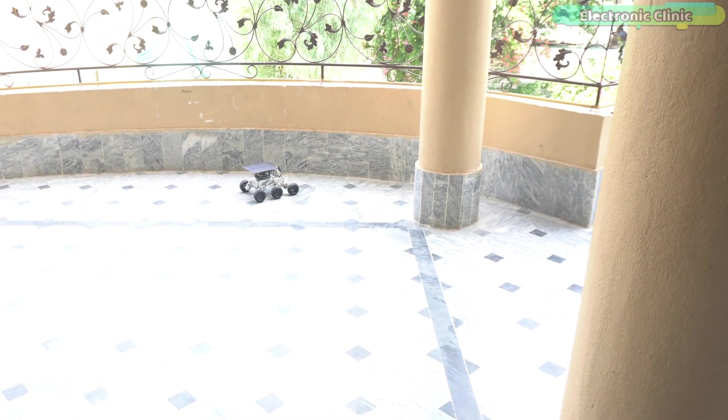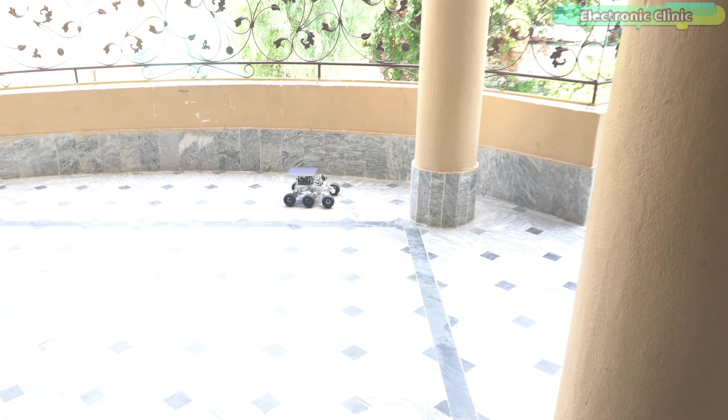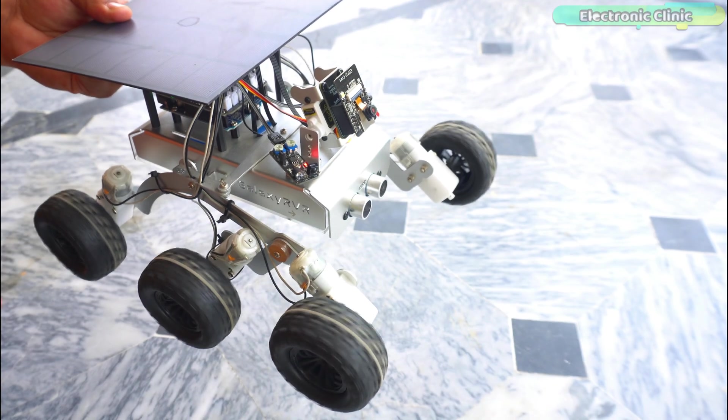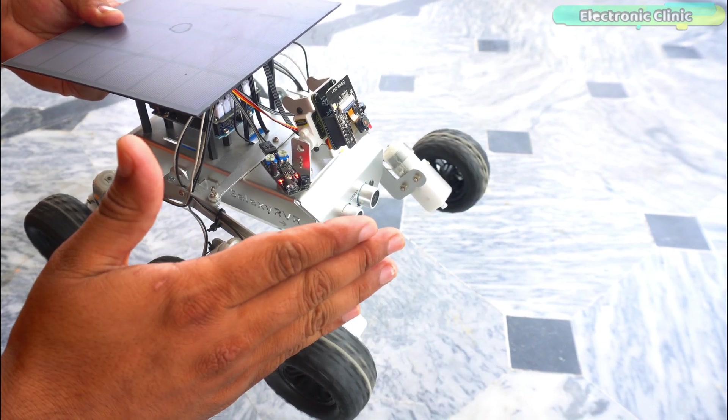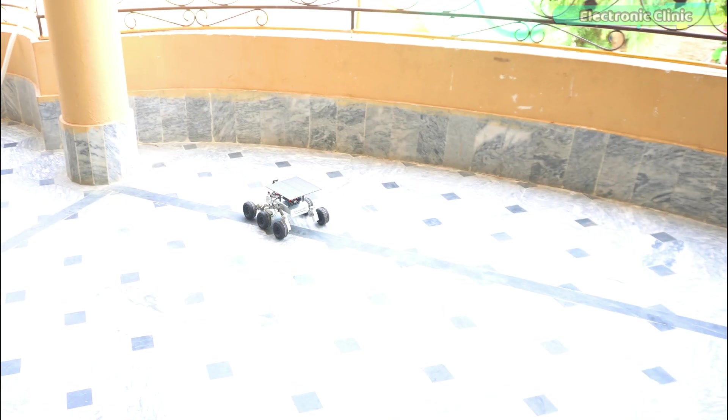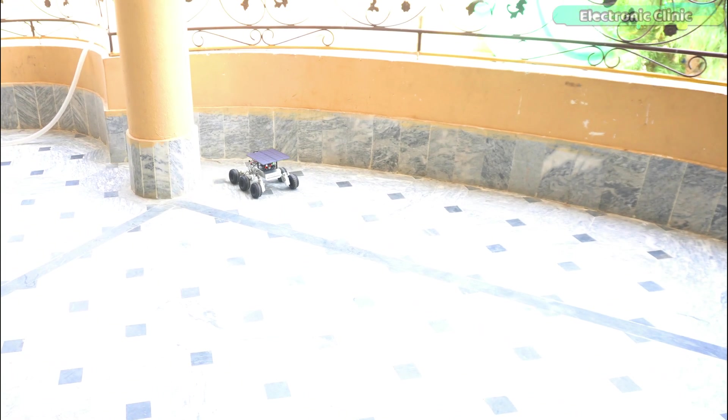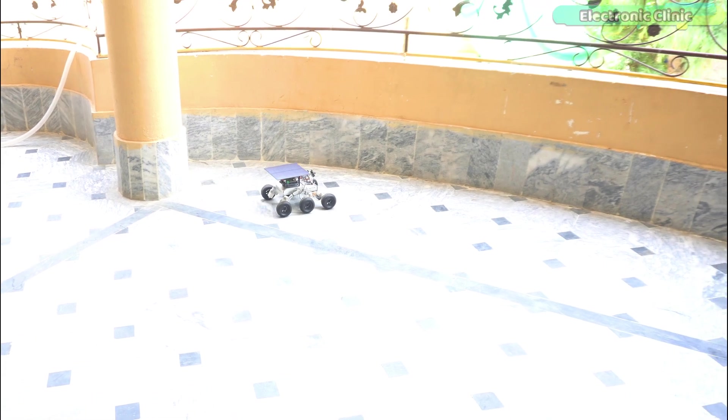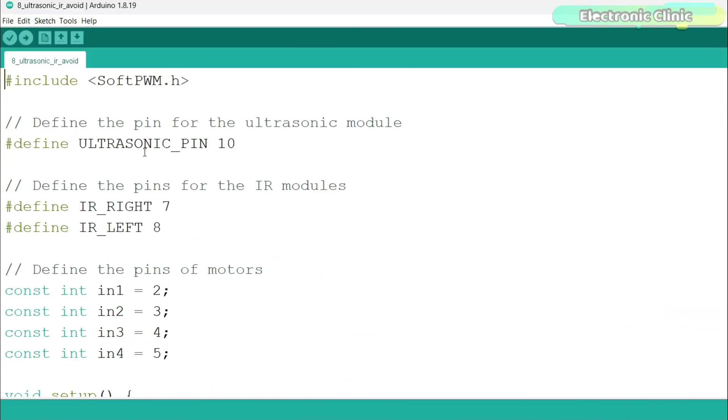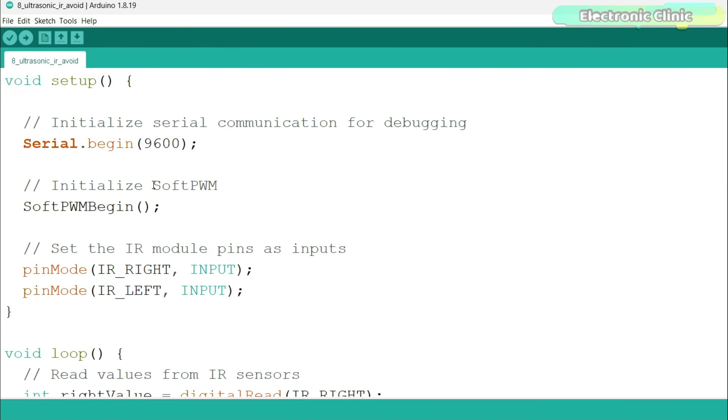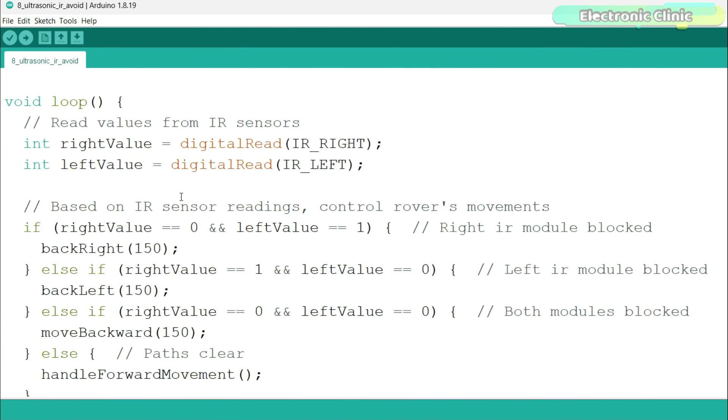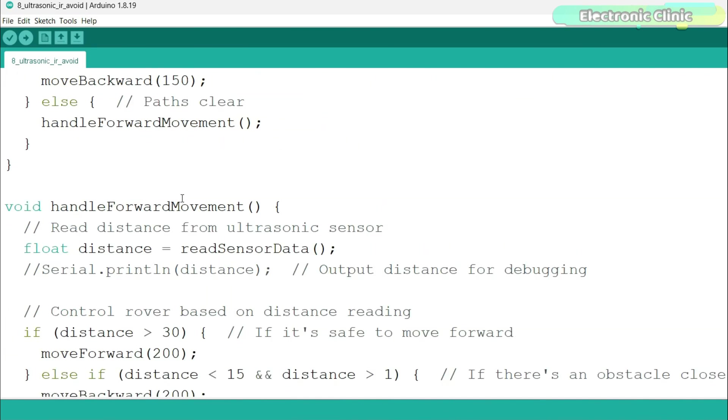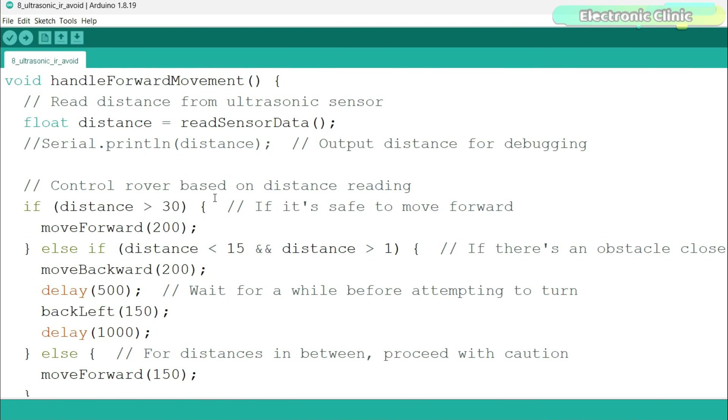Right now, it can only sense objects that are in front of the ultrasonic sensor. It totally ignores objects on the left and right sides. So, next we are going to use the ultrasonic sensor and IR sensor to make the smartest obstacle avoidance system. So, let's do it. This program is just a combination of two projects. The ultrasonic avoidance that you just saw and the IR avoidance system that I explained in lesson number 2.